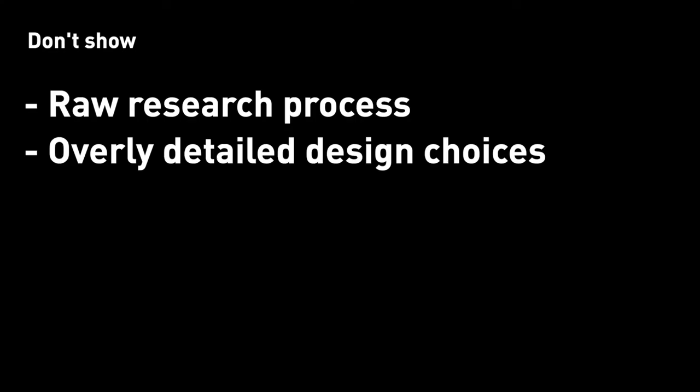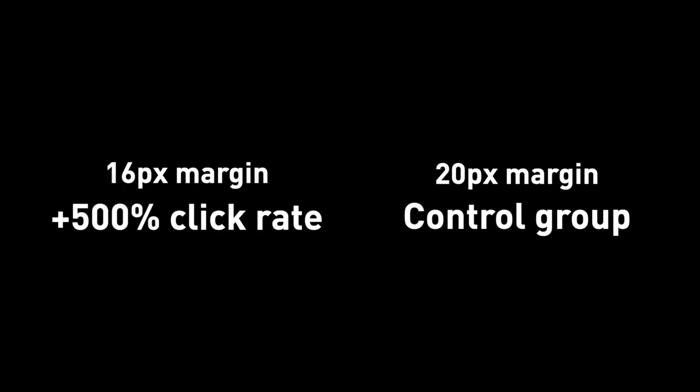Next: super, super detailed design decisions, like why use 16 pixels instead of 20 pixels in this margin. If it's an important and interesting part of your story, sure, show it. But if it's not that important, don't show it. For example, you have two designs — one with a 16-pixel margin and one with 20 pixels — you tested both with users and the one with 16 pixels actually got a 500% increase in click rate. That's a wow-level finding. Most of the time, these kinds of details are not really that interesting, and you can really dial back on these tiny design decisions.